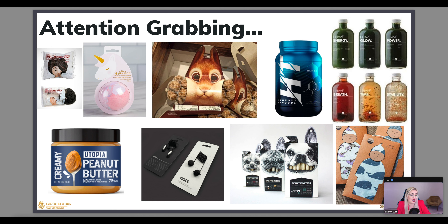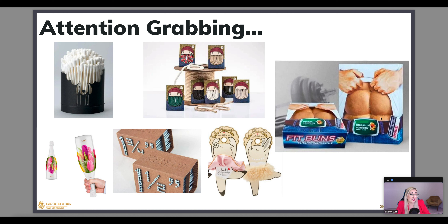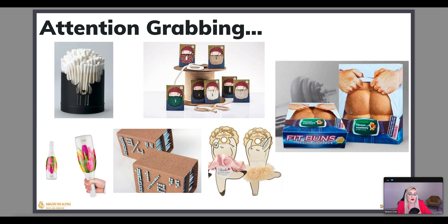This one went viral on TikTok and Instagram — these are called Fit Buns and their packaging makes it look like a six pack, since buns usually aren't healthy and these are supposedly healthy ones. The packaging has the psychology of making you feel like eating this will give you a six pack. These here are super simple hair ties with packaging looking like a tutu of a little girl, fitting the young girl age group. A lot of wine is given as a gift — you can see when you turn it over it looks like a bouquet of flowers.